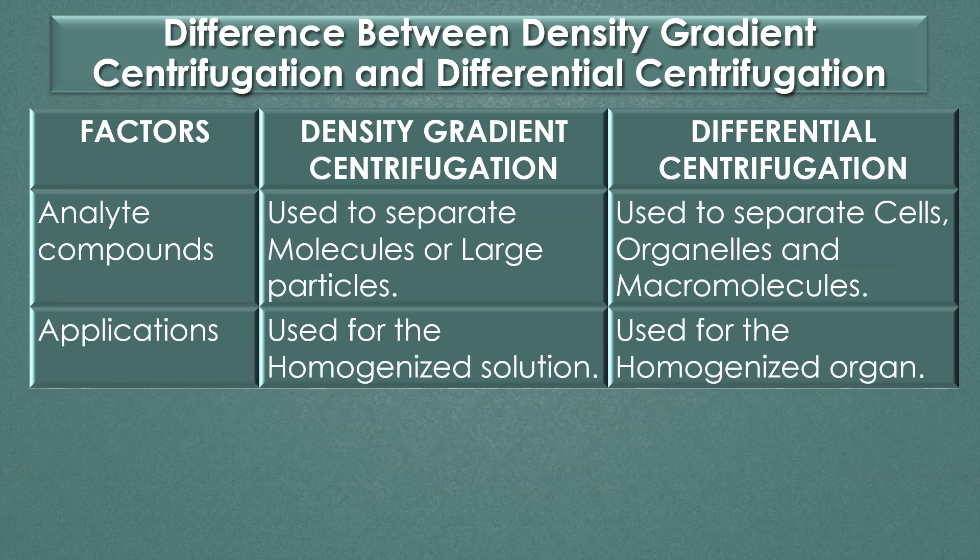Analyte compounds: Density gradient centrifugation is used to separate molecules or large particles. Differential centrifugation is used to separate cells, organelles, and macromolecules.